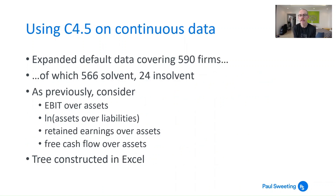Looking at continuous data, which is really what we want to do if we're looking at credit risk modelling, I've taken some credit risk data. I've expanded beyond what I did before and taken default data on 590 firms, of which 566 are solvent and 24 are insolvent. I'm looking at the same variables I've used in all the analysis I've done in the past: EBIT over assets, log of assets over liabilities, retained earnings over assets, and free cash flow over assets.